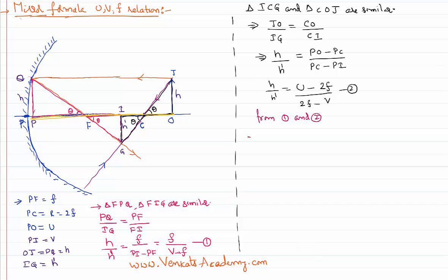From equation one and two, the left-hand sides are the same, so: f by (v minus f) equals (u minus 2f) by (2f minus v). Cross-multiplying further: 2f² minus fv equals uv minus 2fu minus fv plus 2f².